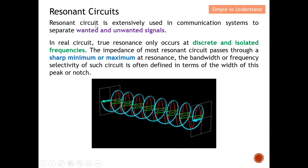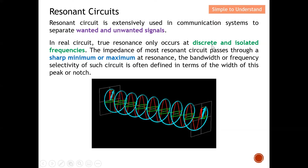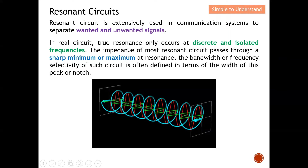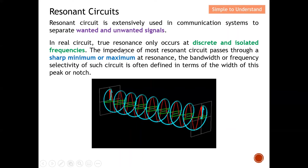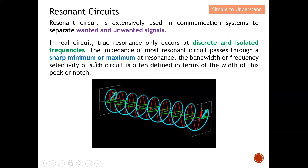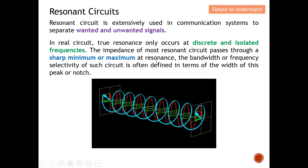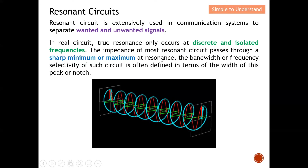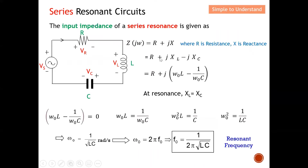So the resonance circuit is used to separate wanted and unwanted signals, and resonance occurs at discrete and isolated frequencies. You can see from the graph that the impedance changes drastically — either at the minimum or maximum — at the resonant frequency. This concludes the definition of resonance circuits. Let's move into series and parallel resonance circuits.